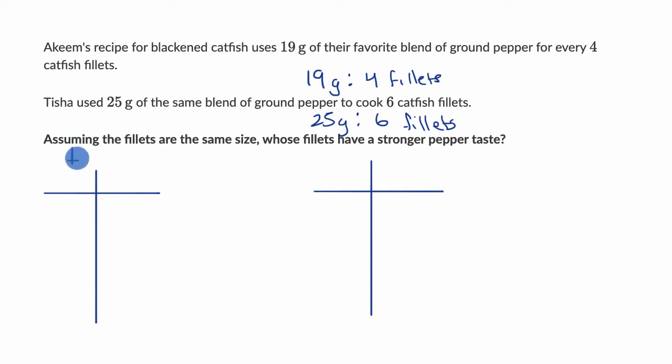So let's say this is Akeem right over here. And this is Tisha. And this is grams of pepper. So pepper in grams, and this is fillets. And then this is, for Tisha, pepper in grams, and this is fillets.